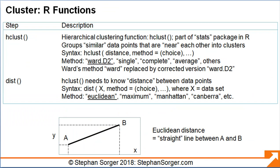R includes several functions useful in hierarchical clustering. The first is hClust, which executes hierarchical clustering, as the name suggests. The function groups similar data points that are near each other into clusters. The hClust function offers several different clustering methods. We recommend using the Ward.D2 method, not the Ward method, because the Ward.D2 method more faithfully captures the actual clustering algorithm created by Ward. To execute the hClust function, we will need to know the distance between the data points. We can compute the distance using the dist function, which offers several different methods. In general, we favor the Euclidean method, where distances are measured using a straight line from one point to the other.